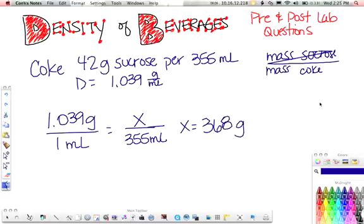And so that gets plugged in to this little guy. So you have 42 grams of sugar divided by 368 grams of soda, and that works out to 11%. And then you do this calculation twice with the other drink as well.